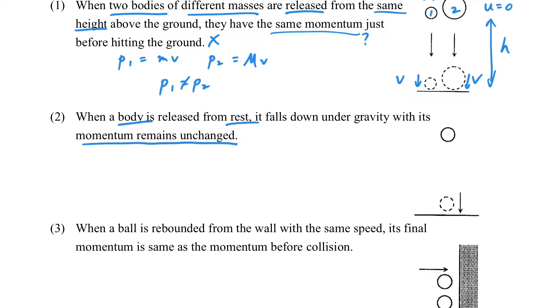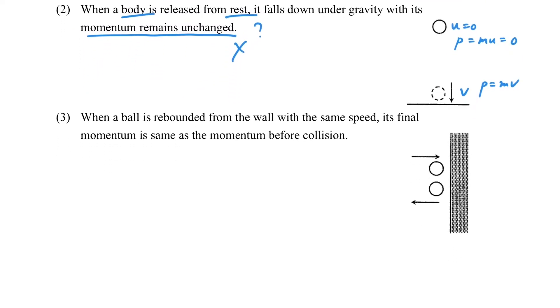And if we have a body at rest under gravity, will the momentum remain unchanged? Surely not. Because at the beginning, the momentum is zero due to zero speed. But finally, the velocity will be increased, so the momentum is changed also.